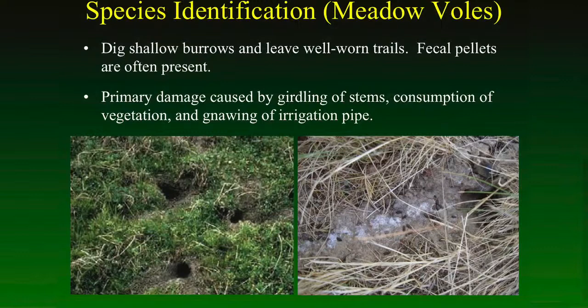As far as damage, girdling of stems is a really common form of damage. Newly planted trees and vines can be girdled causing quite a bit of damage that way. Direct consumption of vegetation, gnawing on the irrigation pipe, any rodent species is always going to be a problem when it comes to gnawing on the hoses, the irrigation pipe, anything that's plastic out there that you can't figure out why they're chewing on it from some species of rodent. Incidentally, does anybody know why they're constantly chewing on these kinds of devices?